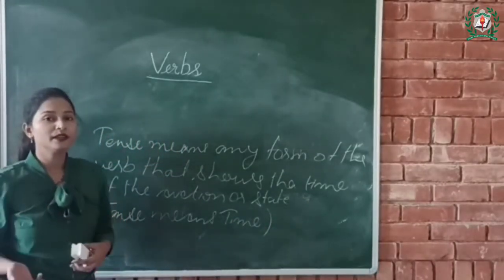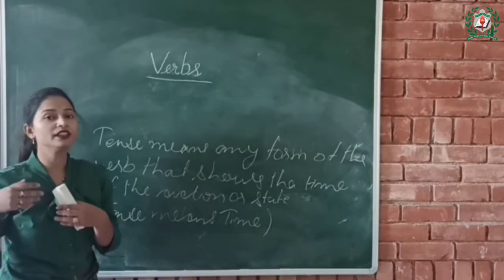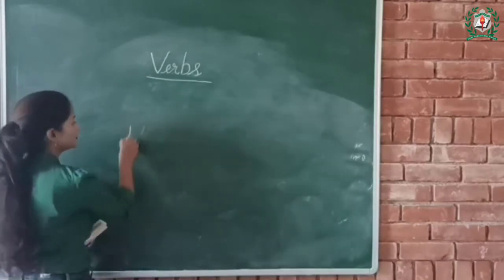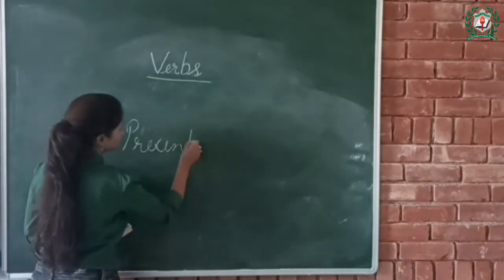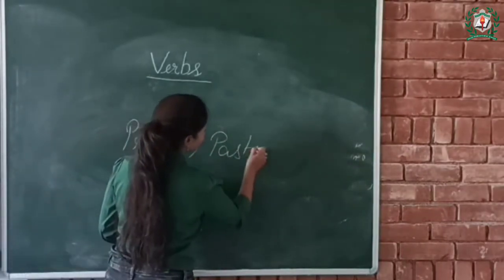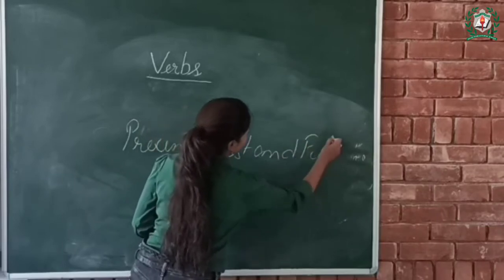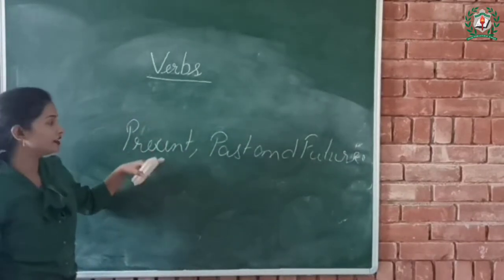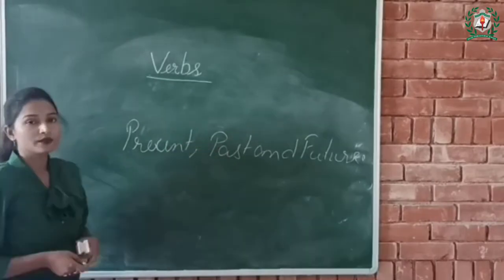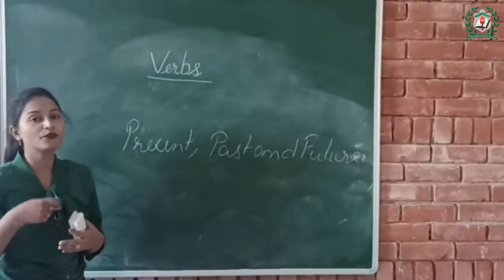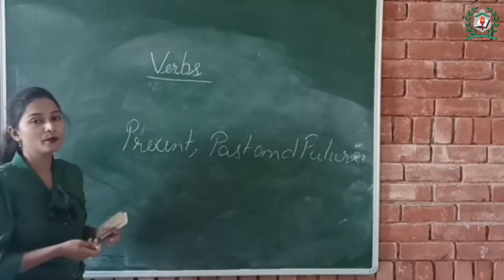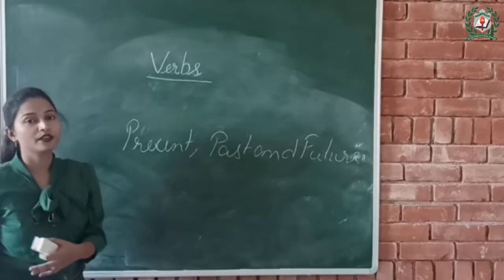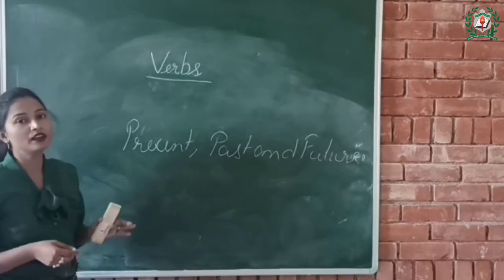Tense means any form of the verb that shows the time of the action or state. There are three main verb tenses: present, past, and future. These are further divided into four aspects: simple, continuous, perfect, and perfect progressive. We will first study about the simple tenses.